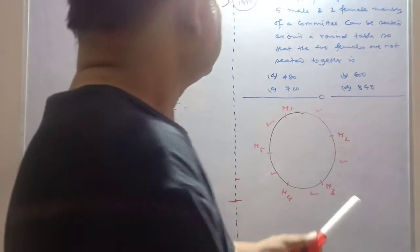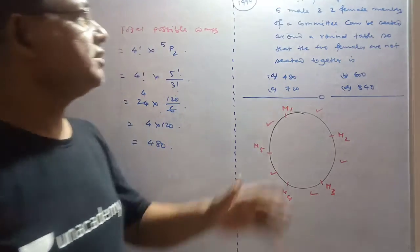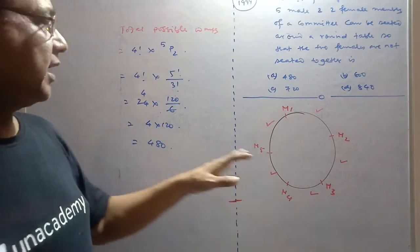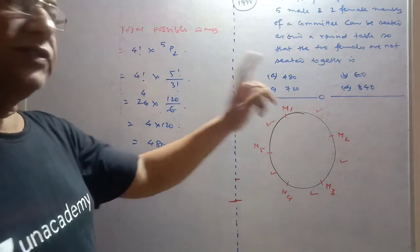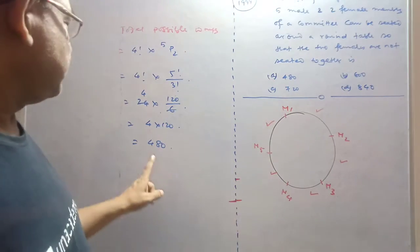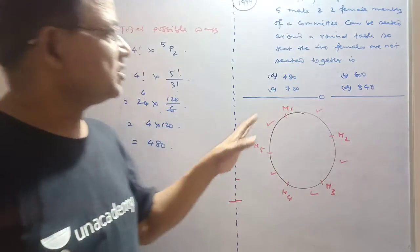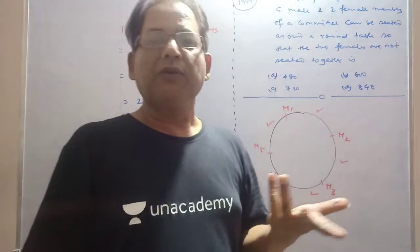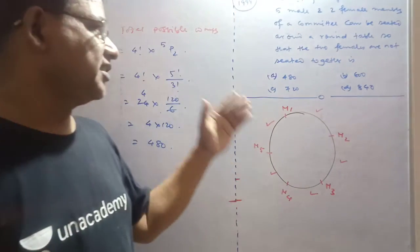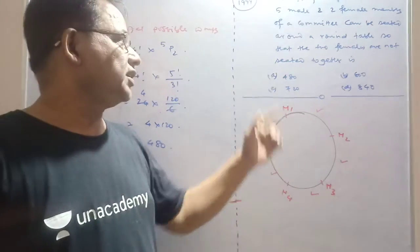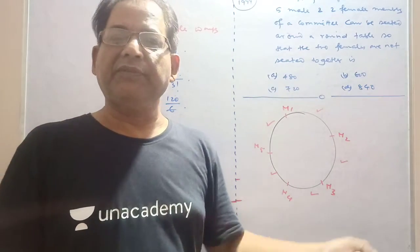So my dear friends, this is clear. This is the number of ways in which five males and two females can be seated in a round table such that two females are not seated together. The total possible ways is 480. This is the solution of your problem and the right approach for such problems. That's all, my friends.